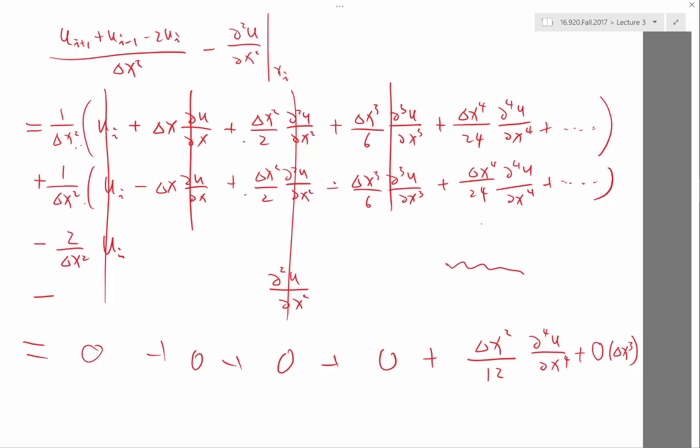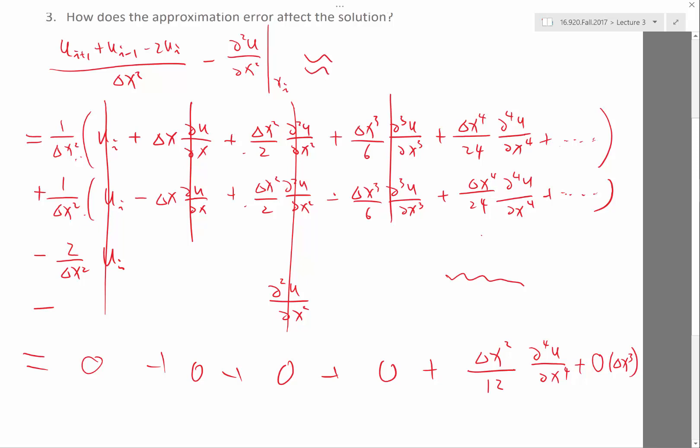So, we know that the approximation error is, first of all, it's going to be dependent on how the fourth derivative of u is like. And it is proportional to delta x squared over 12.